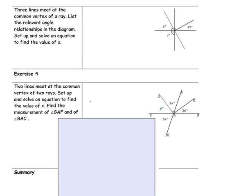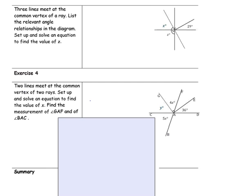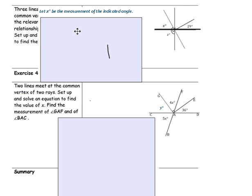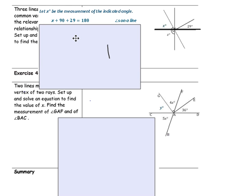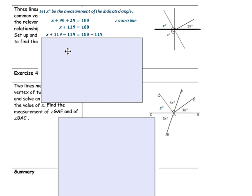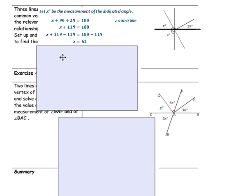Example 4: Three lines meet at a vertex of a ray. List the relevant angle relationship in the diagram and set up and solve an equation to find the value of z. Let x be the measurement of the indicated angle. We know that x plus 90 plus 29 equals 180 degrees — angles on a line. Combining like terms gives 119 degrees, then solving for x by subtracting 119 degrees gives a value of x equal to 61 degrees.